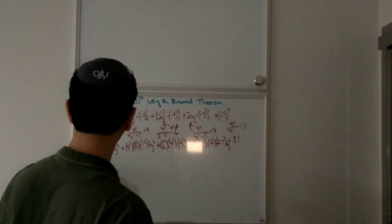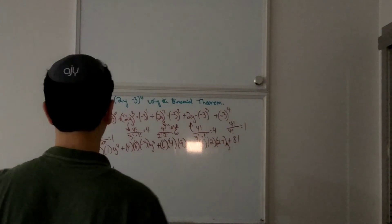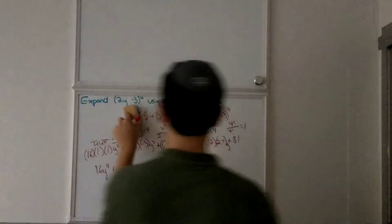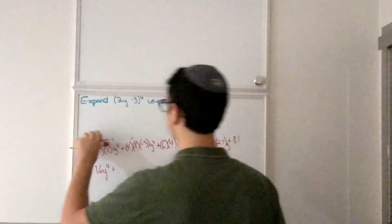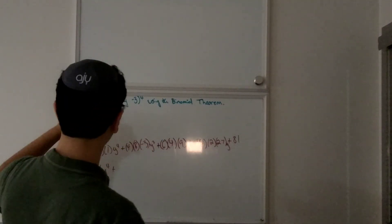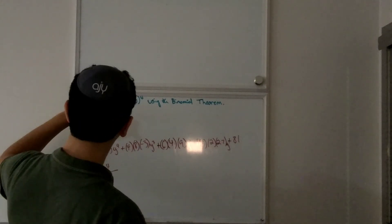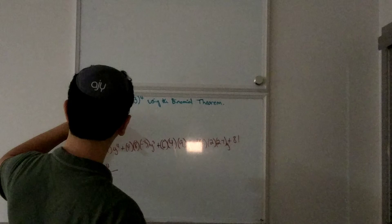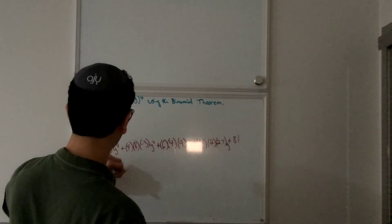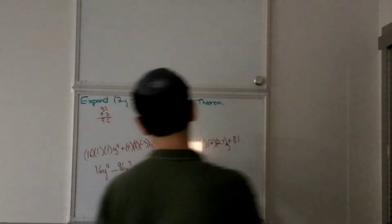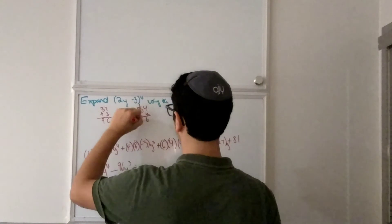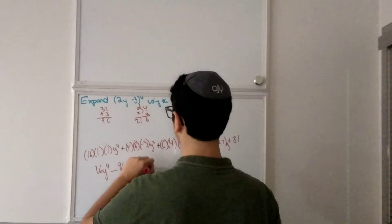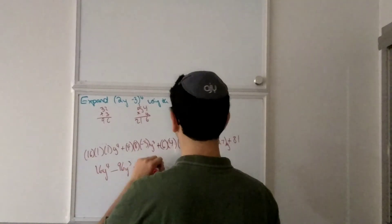So this is going to be 16y to the 4th. Then 32 times 3 with a negative sign gives minus 96y cubed. Then 9 times 4 is 36, times 4 is... that gives 216y squared.